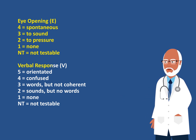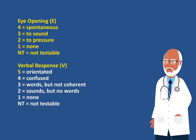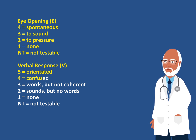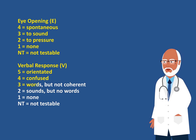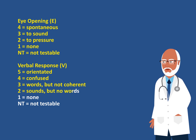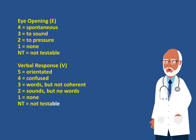The next component is the verbal response. There are five points if the person is oriented. There are four points if the person is confused. There are three points if the person can speak words but they are not coherent. There are two points if the person makes sounds but no words. And there is one point if there is no utterance whatsoever.